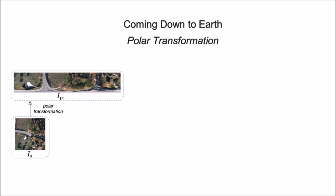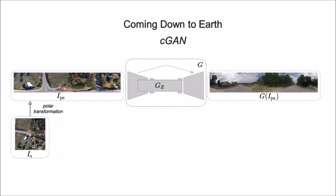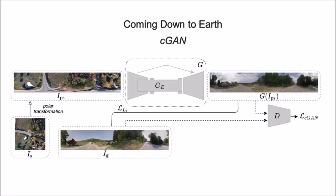Initially, we apply a polar transformation to the satellite input. This maps the content of the input to an approximate street view. As a next step, we convert polar-transformed satellite inputs to street images using a generative adversarial model. The generator G takes the polar-transformed input and translates it into a photorealistic panorama. The generated images as well as the ground truth street views are then fed to the discriminator D, which tries to determine whether the respective images are real or fake.